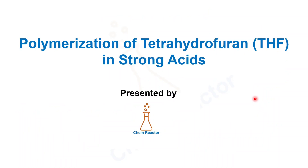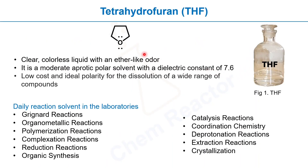Welcome to a Chem Reactor. Today I'm going to talk about a very interesting topic in chemistry: the polymerization of tetrahydrofuran (THF) in strong acids. Before going to the polymerization, what is THF? THF is a clear, colorless liquid with an ether-like odor. Basically, it's a cyclic ether. It is a moderately polar aprotic solvent with a dielectric constant of 7.6.